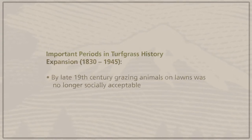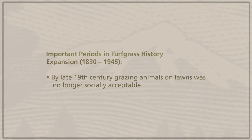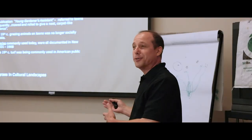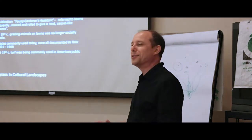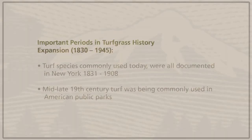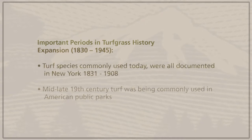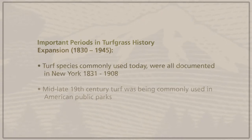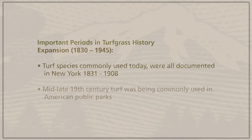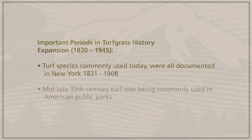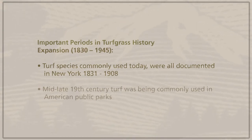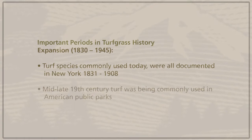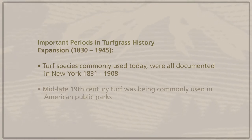By the late 19th century, grazing animals on lawns was no longer socially acceptable. People now had lawn mowers available and were thinking, why would I want livestock out on my front lawn? The turf species commonly used today were all documented in New York by 1908, with clear record by Cornell University that those species existed in the state at that time.